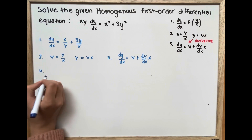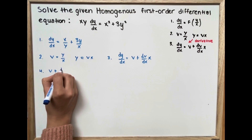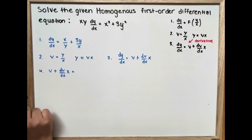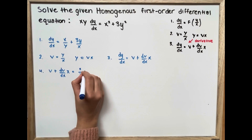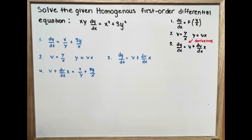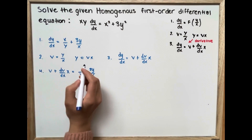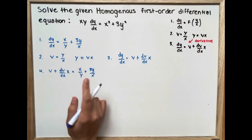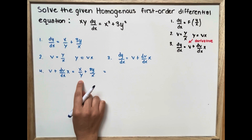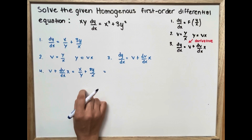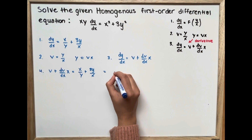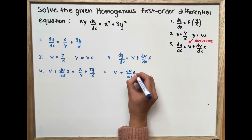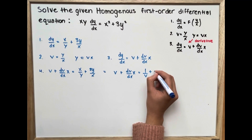Step four: we substitute dy/dx into our equation. So we have v plus x times dv/dx set equal to x divided by y plus 3y over x. We then substitute all y/x terms with v, giving v plus x times dv/dx equals 1 over v plus 3v.